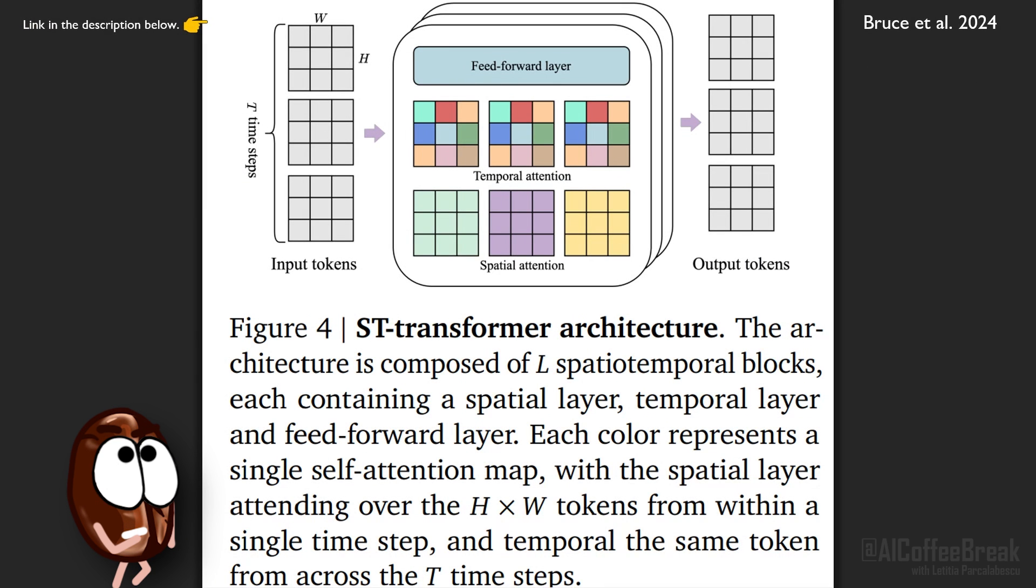Now what is that ST-transformer that is the architecture of the encoder and the decoder? An ST-transformer, which stands for spatial-temporal transformer, unlike normal transformers has two attention layers. The first attention layer is a spatial layer that attends within the same frame to all different pixels.